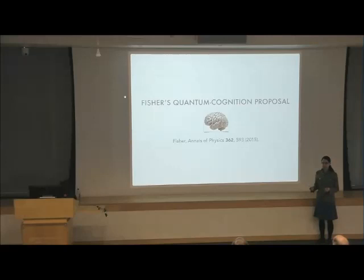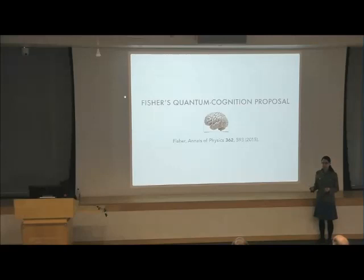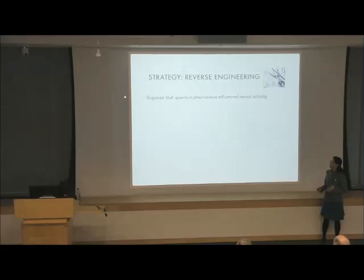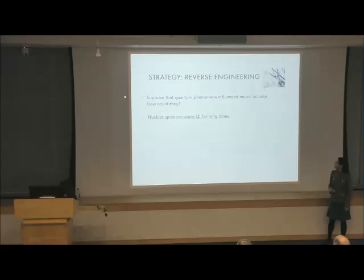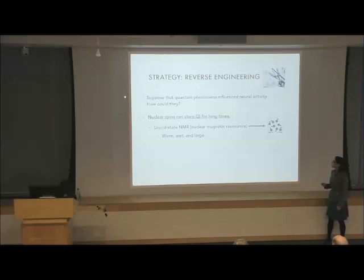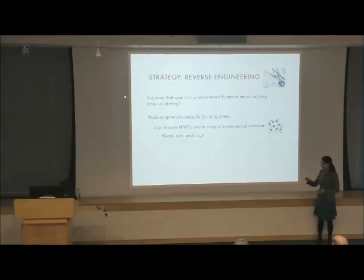So let's talk about Matthew's proposal. He took the perspective of reverse engineering. He said, suppose that somehow quantum phenomena do affect cognition. How could they possibly do so? Can we design a mechanism by which they might? Well, nuclear spins are known to store quantum information for a long time. An example is liquid-state NMR, nuclear magnetic resonance. This involves a whole bunch of particles whose nuclei have the right spin number such that they can be manipulated for quantum information processing purposes.